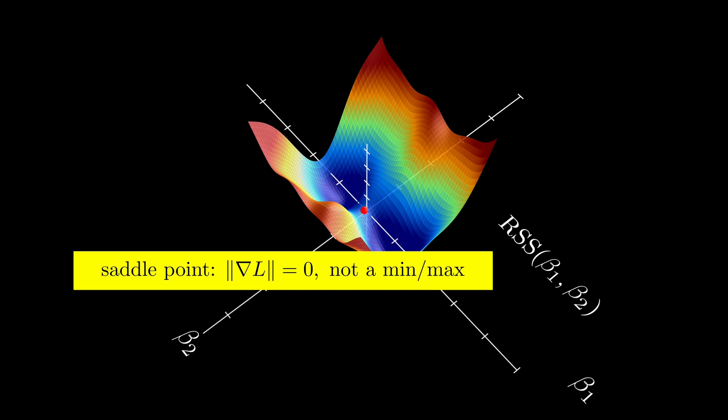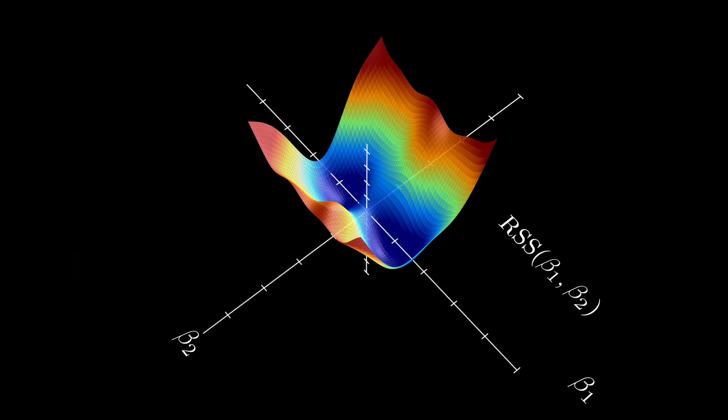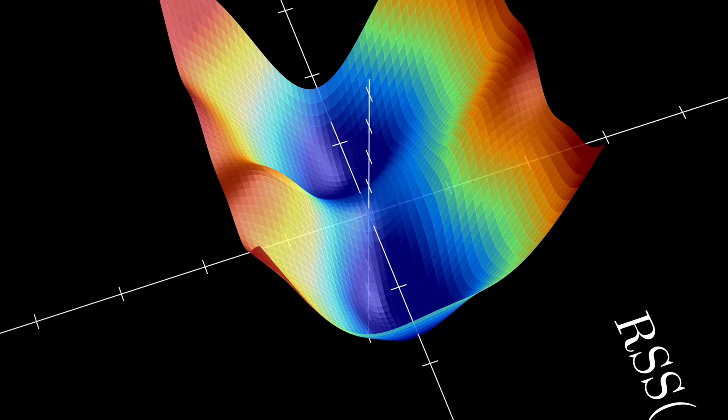Then there are flat regions where the gradient is almost zero for a large area. When the algorithm enters such a region, it slows down dramatically, even though it hasn't yet reached the minimum.